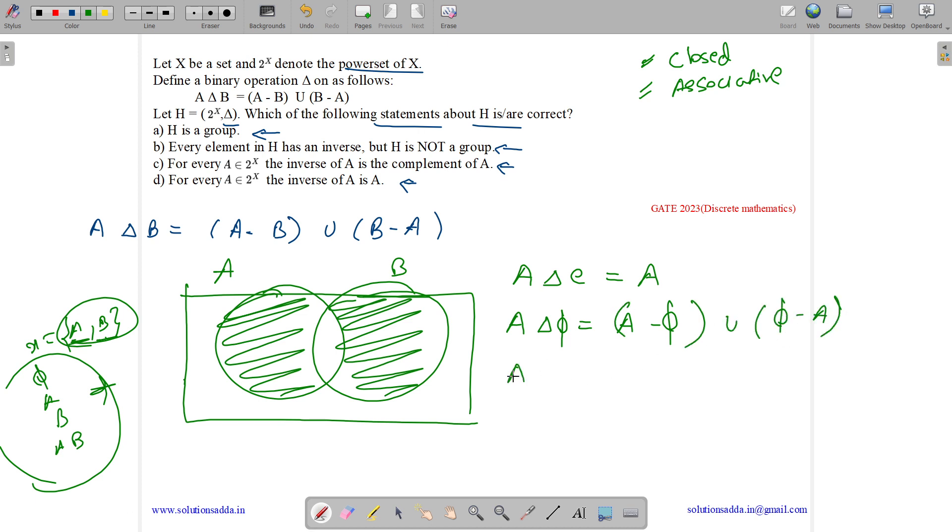So what is A delta phi? A delta phi equals to A minus phi union phi minus A. What is phi subtracted from any set will give the same set. So we will have A. And anything subtracted from phi will give phi. So we will have A delta phi equals to A. So identity exists. And what is identity? Phi is our identity.